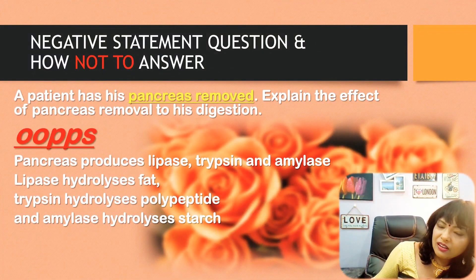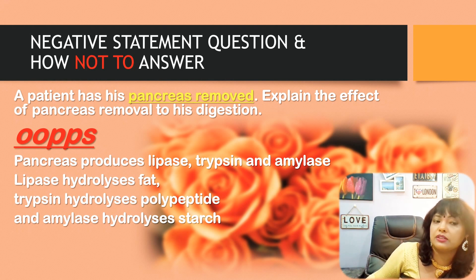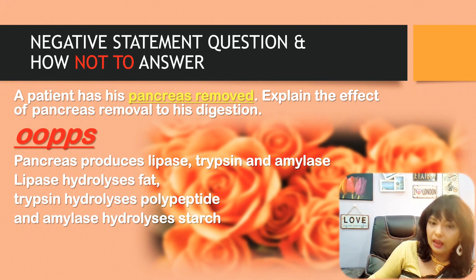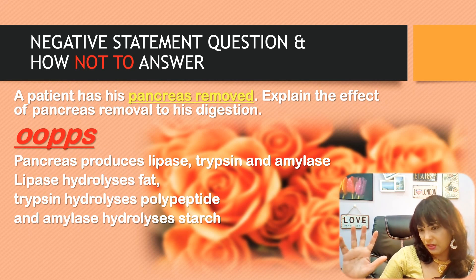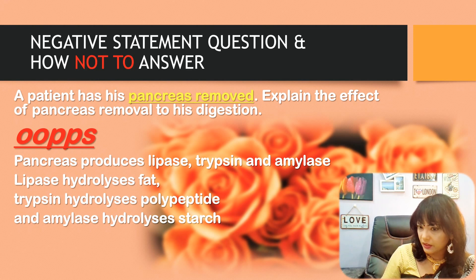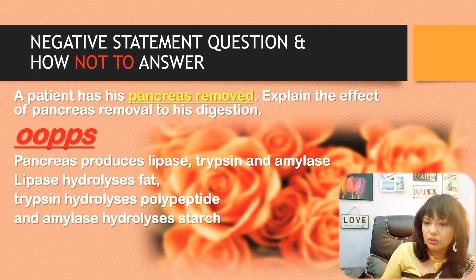Let's look at the second example. A patient had his pancreas removed — explain the effect of pancreas removal on his digestion. The oops answer is: the pancreas produces lipase, trypsin, and amylase; lipase hydrolyses fat, trypsin hydrolyses polypeptide, and amylase hydrolyses starch. A beautiful answer full of facts, but unfortunately no marks — because technically it does not satisfy the need of the question.